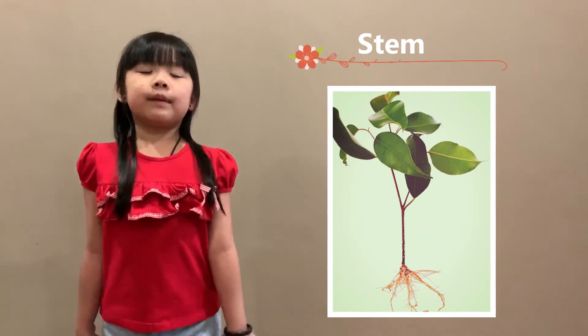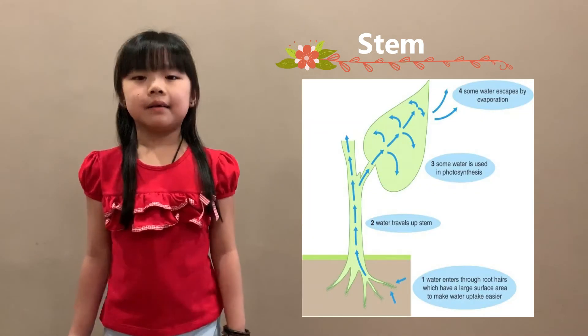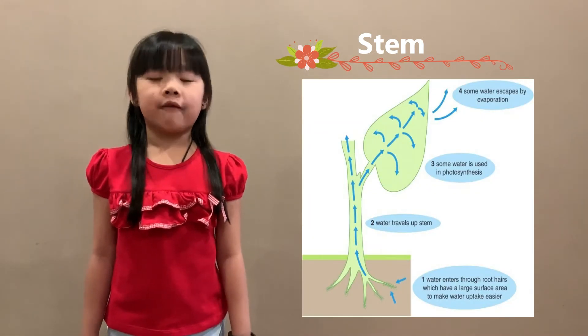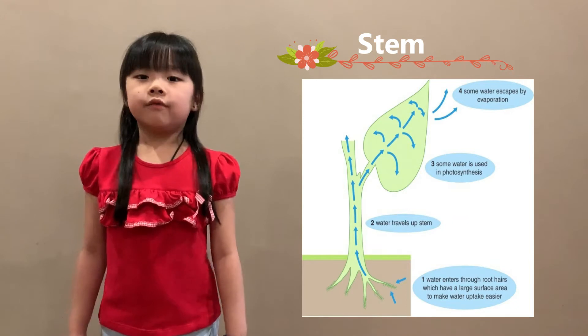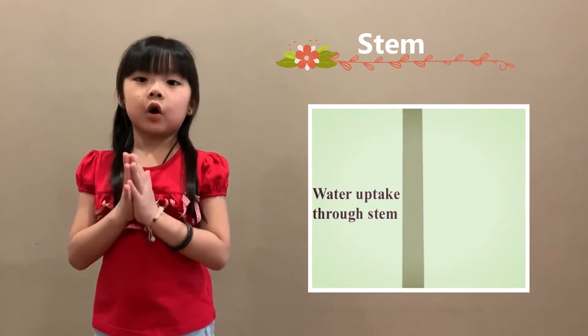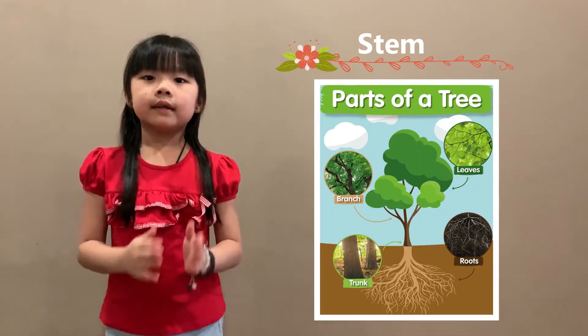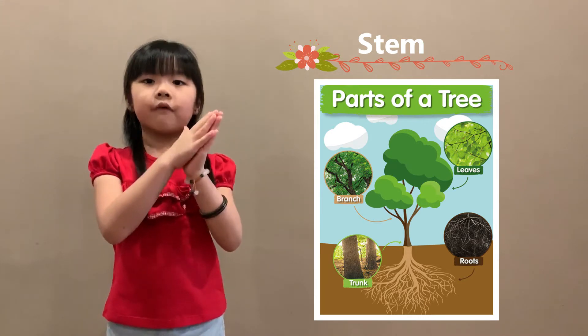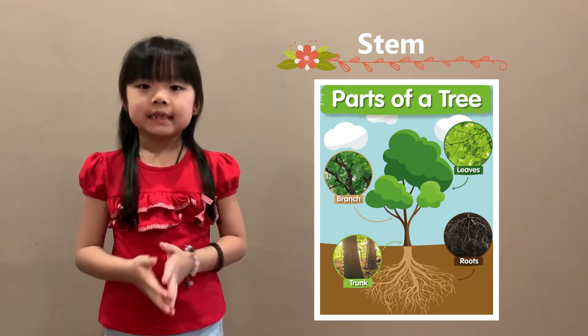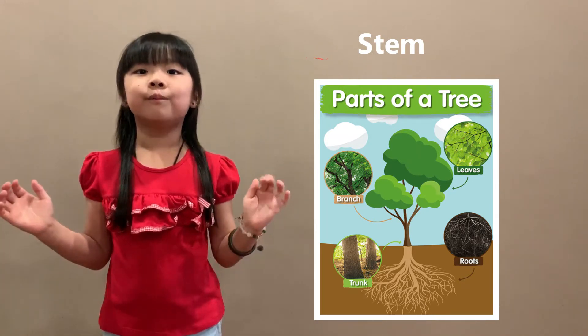Now stem. Stem is the pillar of the plant. It can hold the plant upright and carries water, fruit and mineral to the other parts of the plants from the root. Smaller plant we call it stem, bigger tree we call it trunk. And the smaller part of the tree we call it branches. At the end of the branches we have a lot of leaves.